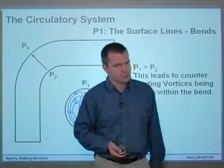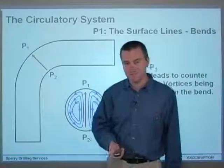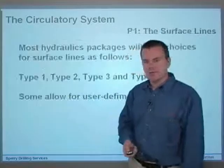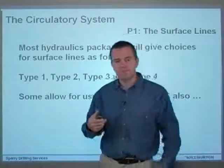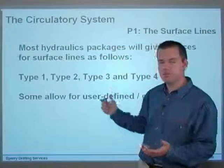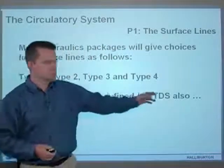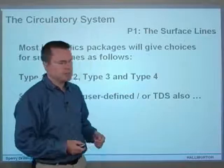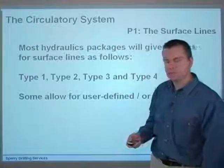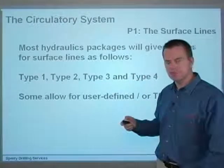None of our software actually takes into account the surface system bends in the pipework. Most hydraulics packages will give you choices for surface lines as follows: Type 1, Type 2, Type 3, and Type 4. Some also allow for user-defined or top-drive systems. I'll explain what Type 1 through 4 mean by showing you what you can select within Insight and within WellPlan.